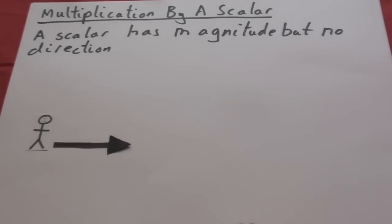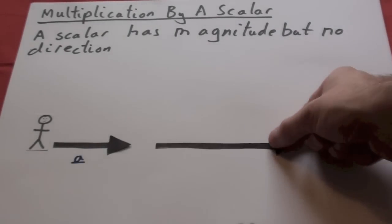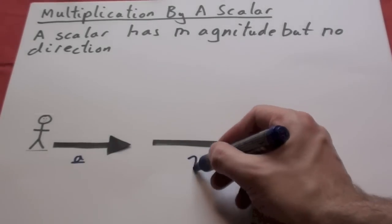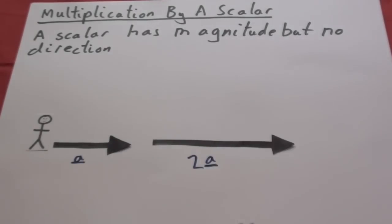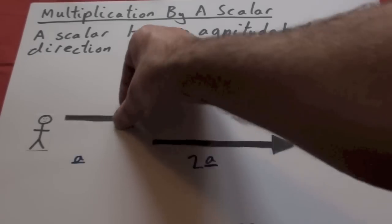Here's Monsieur Mathematique. He's going in that direction. This is the vector A. He now wants to go twice as far in the same direction. This is two lots of A. It's twice the distance but in exactly the same direction.